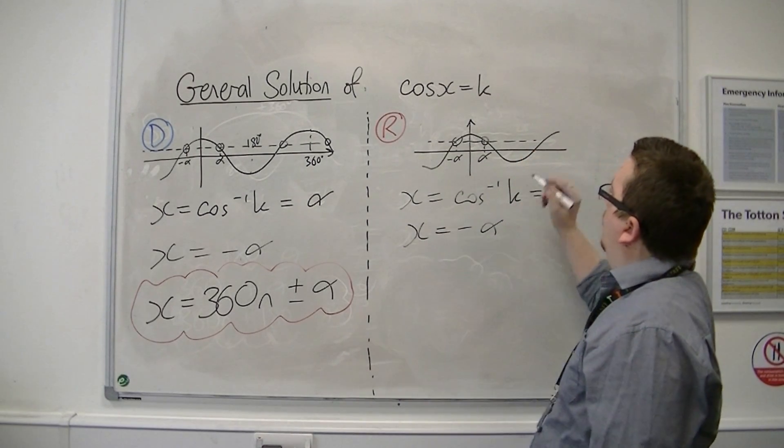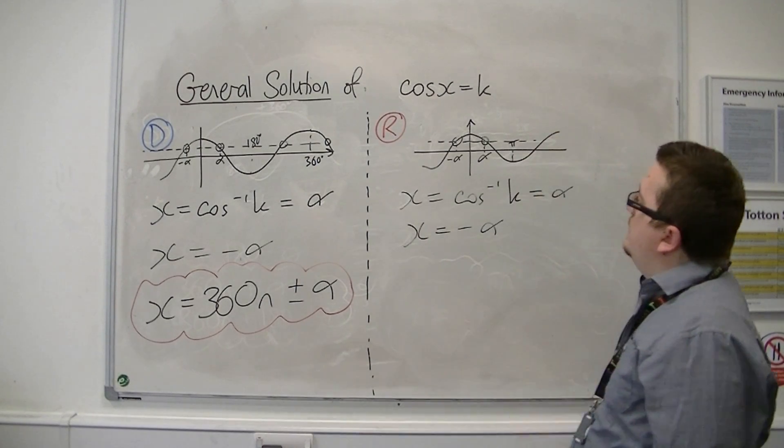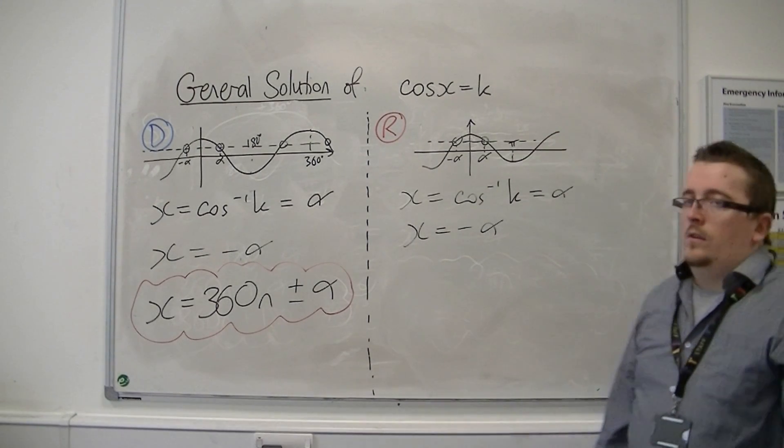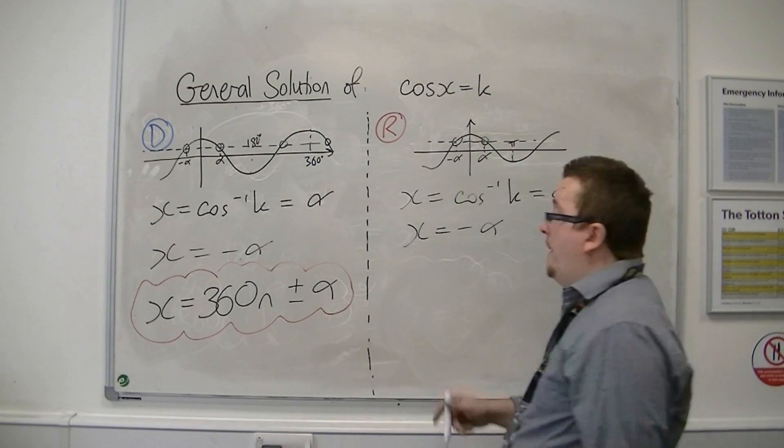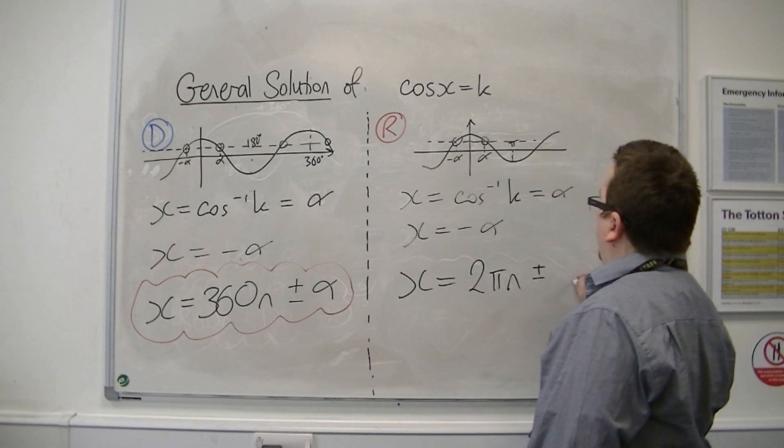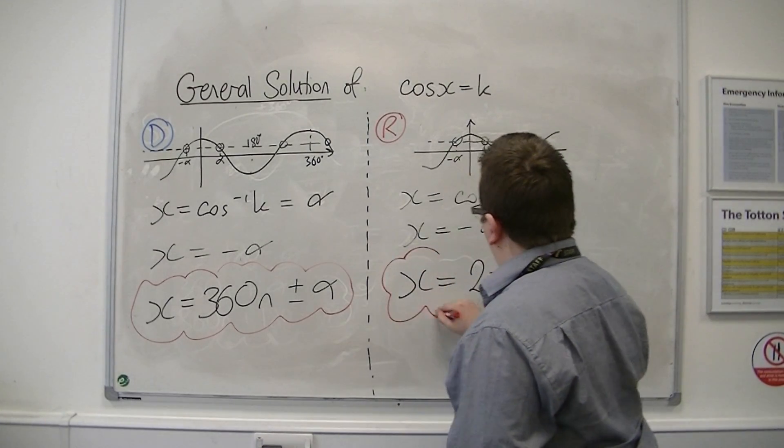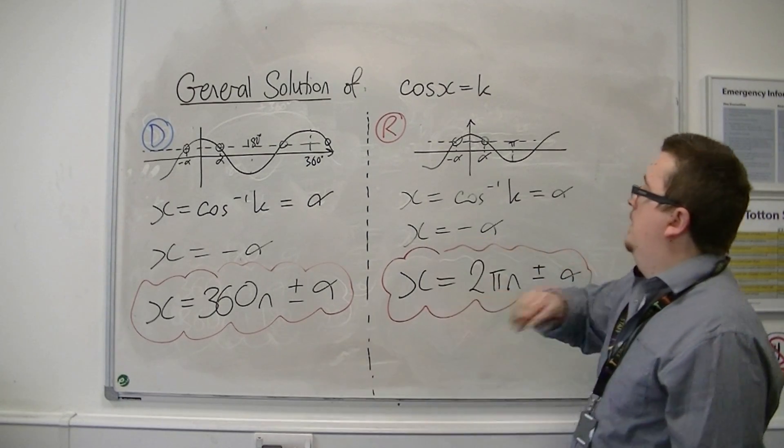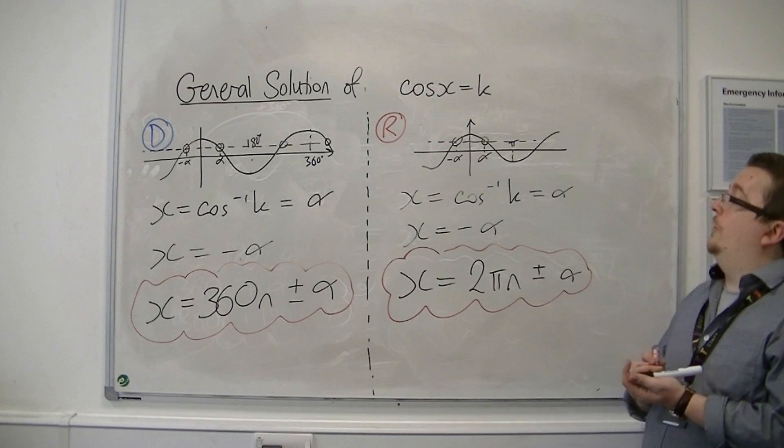But because I am working in radians now, instead of having a period of 360, it has a period of 2π. So x is equal to 2πn, plus or minus alpha. And that is the general equation, general solution, to cos x equals k.